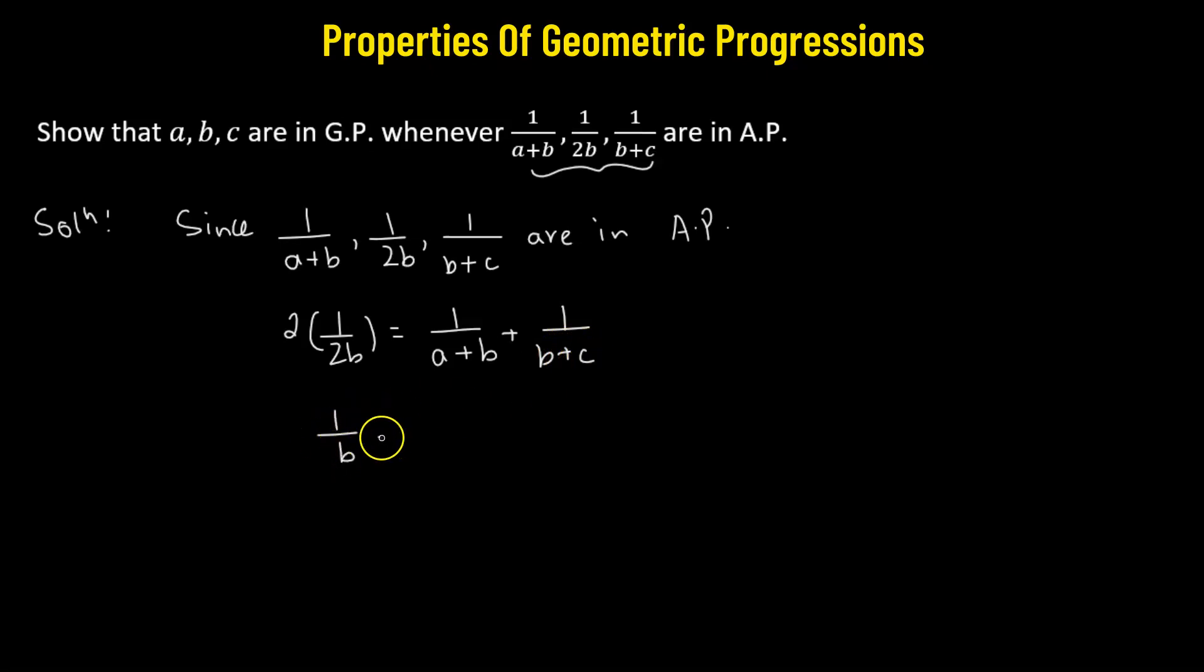So this is going to give us 1 over b equals to, we can combine the two terms on the right hand side, so our common denominator will be a plus b multiplied by b plus c. In the numerator, we're going to have b plus c plus a plus b, which is going to give us 1 over b equals to a plus 2b plus c,